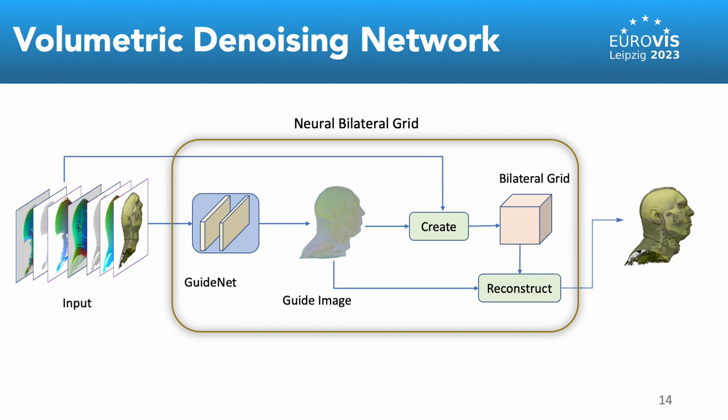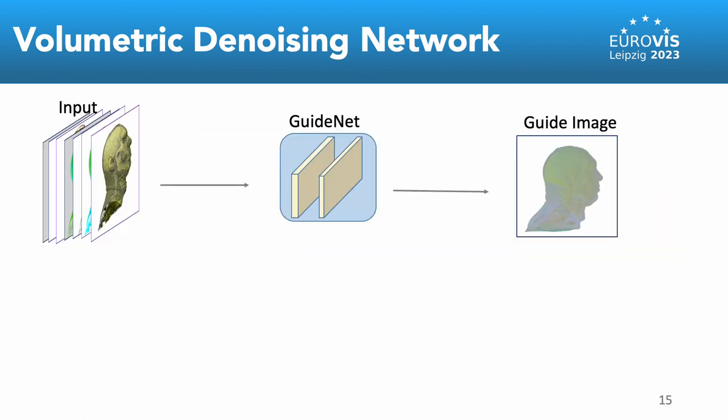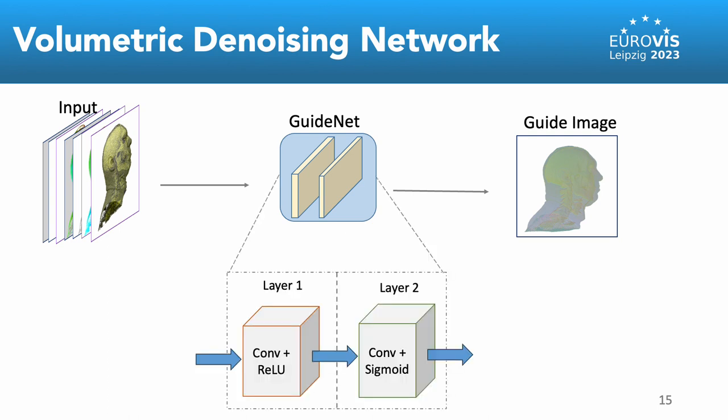With these features as input, we use a neural bilateral grid to denoise the noisy input. The network is divided into two steps. First, the input which consists of the noisy one-sample-path-per-pixel radiance image and the auxiliary feature is fed into a compact neural network to output the guide image. The neural network consists of two convolution layers with 20 channels and a kernel size of 5x5.